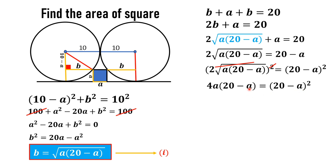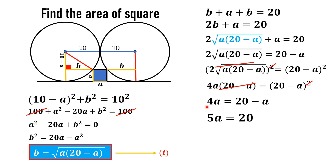Now, since this whole length is equal to 20 and a is a smaller portion of it, a cannot equal 20. So we can divide both sides by (20 minus a), which cancels out, giving us 4a equals 20 minus a. Bringing a to the left side: 5a equals 20. Dividing both sides by 5, we get a equals 4. We have now found the side length of the square.